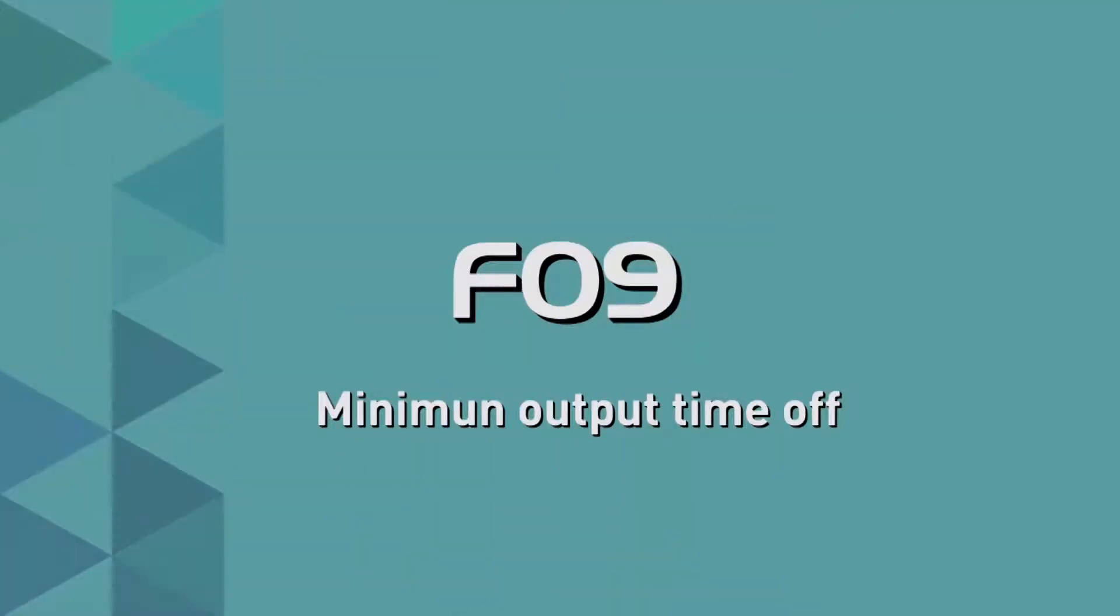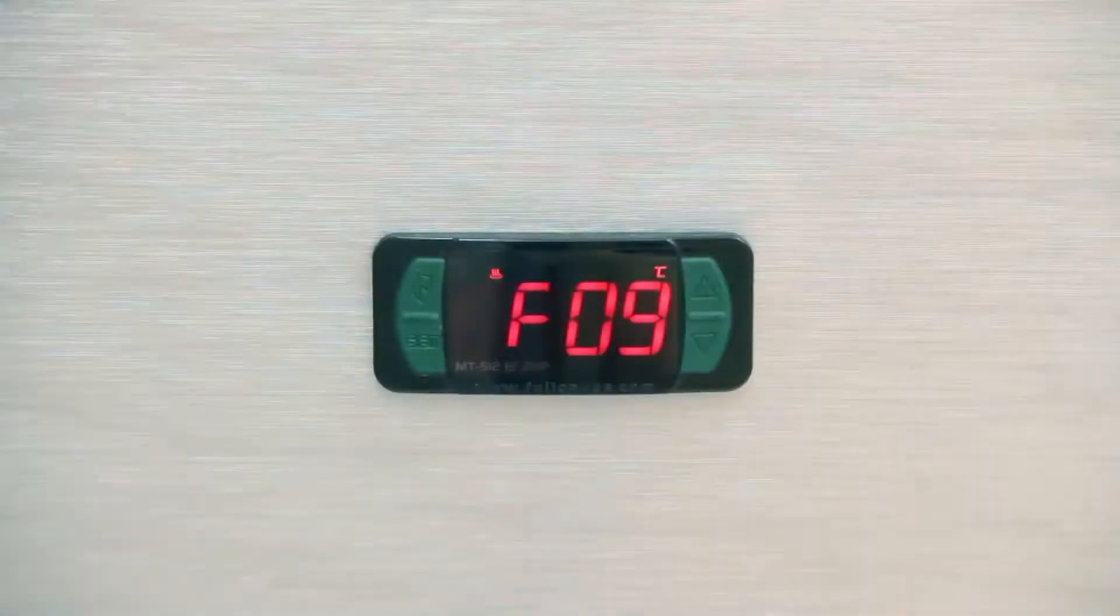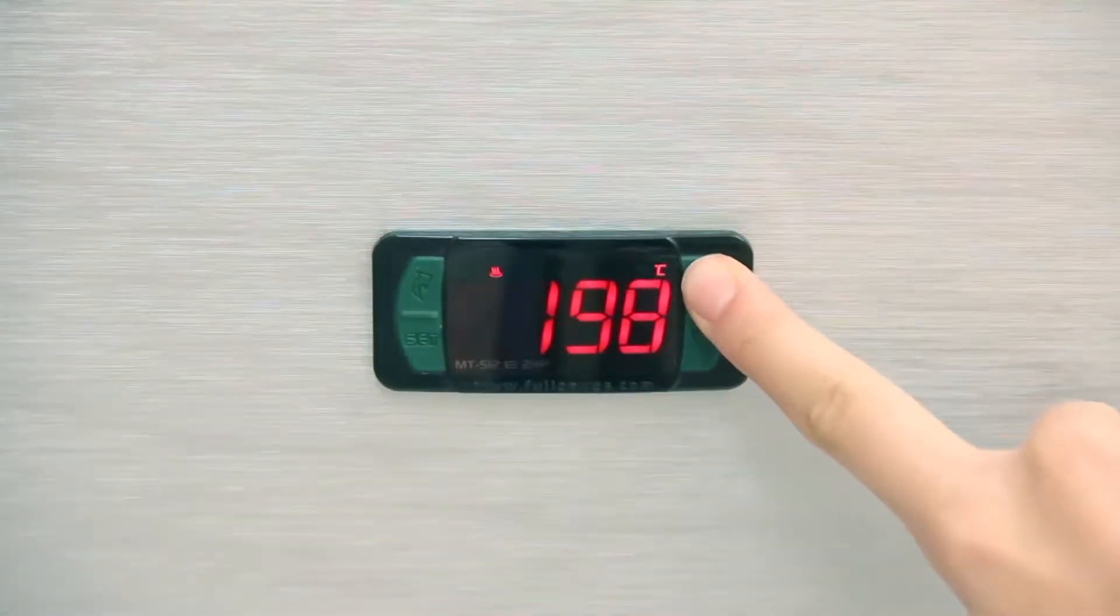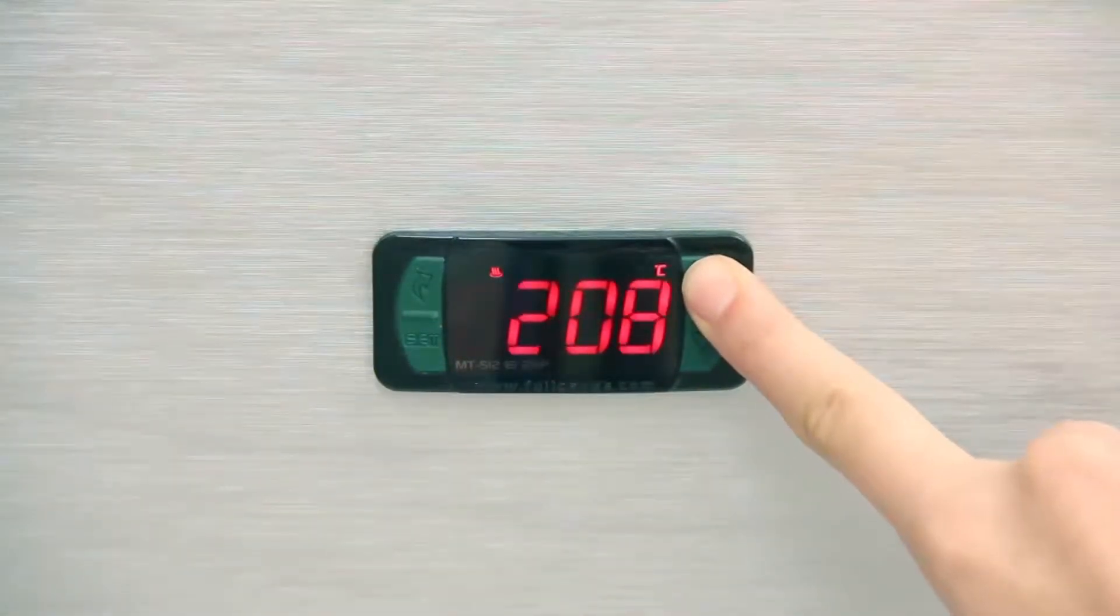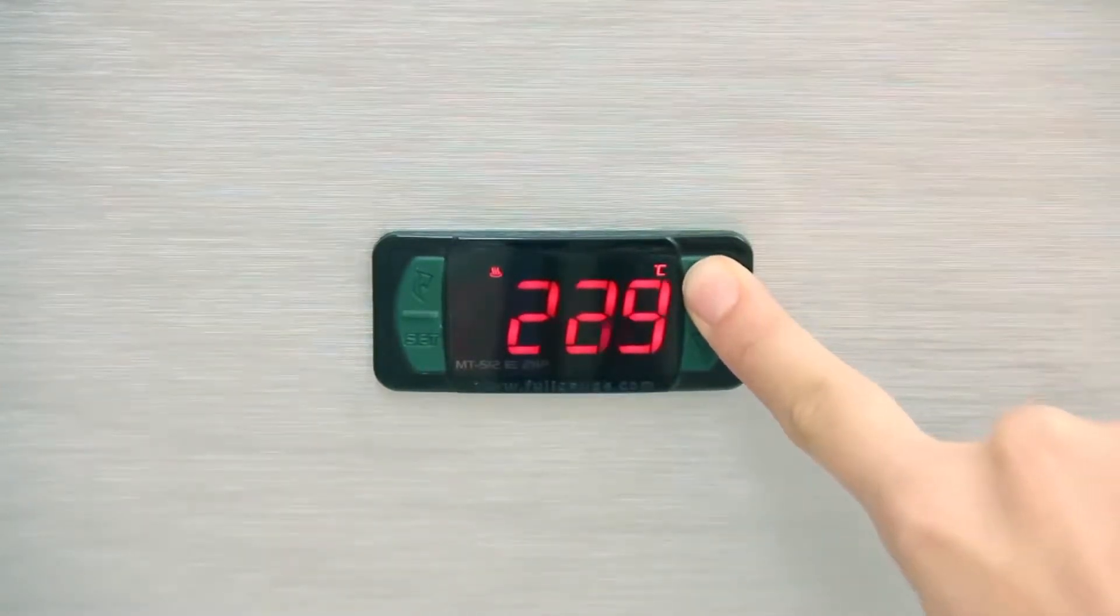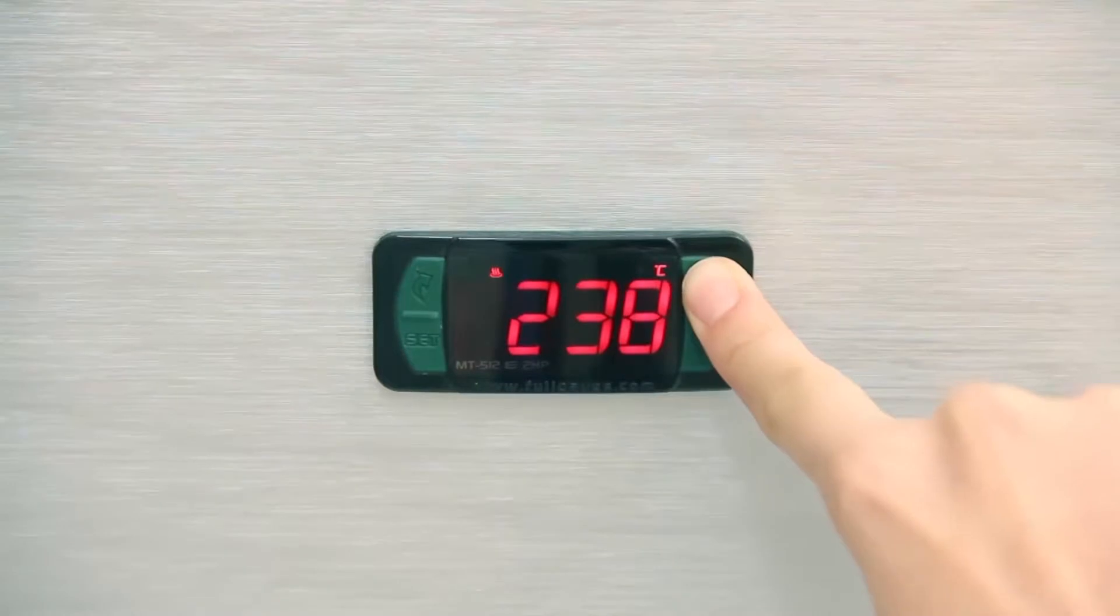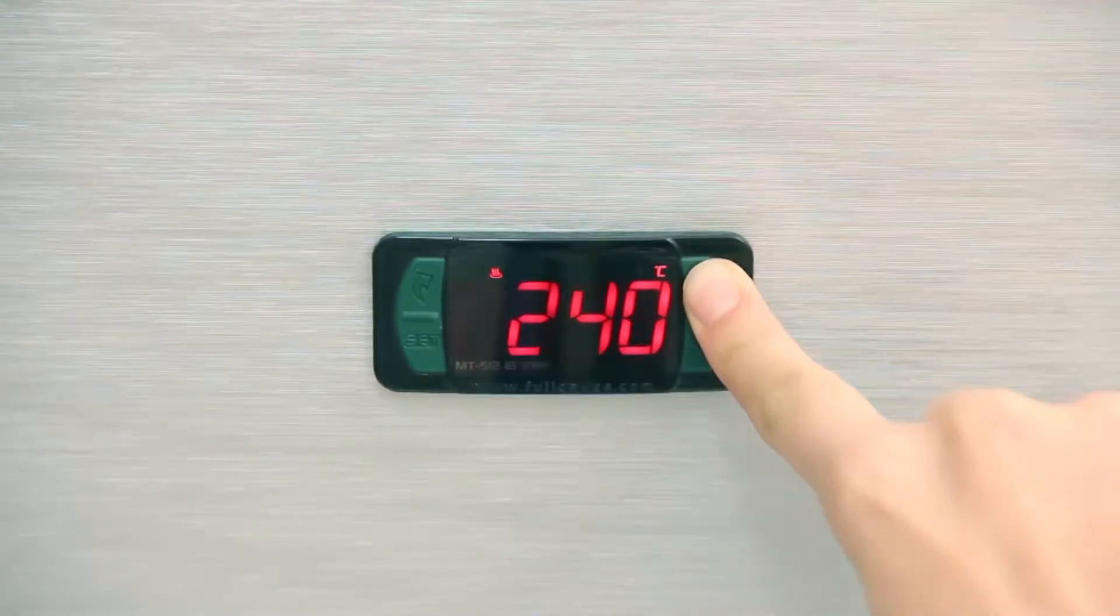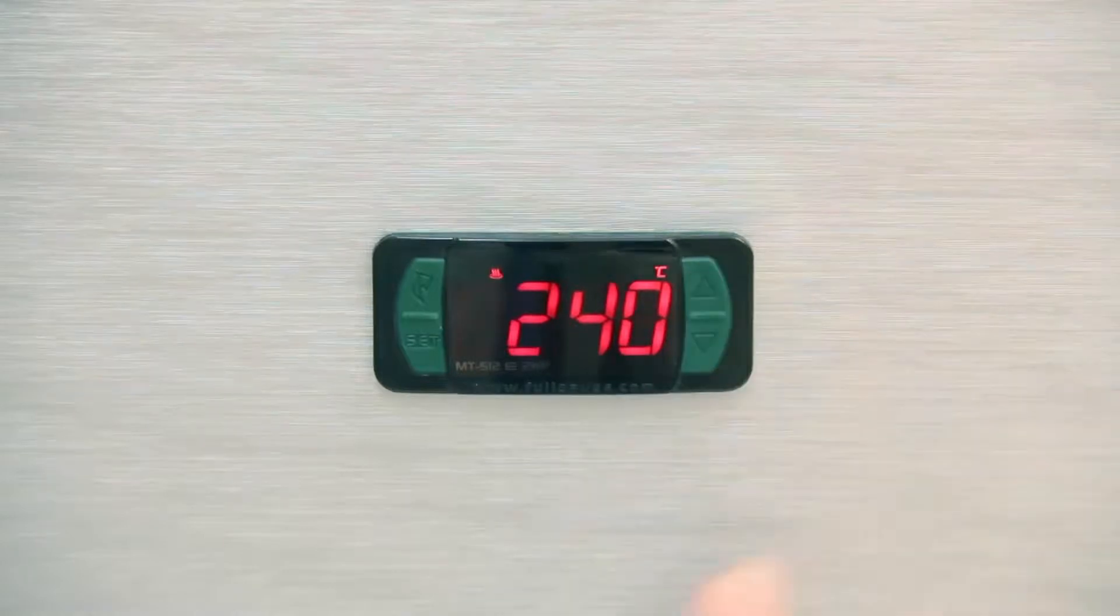F09 Minimum Output Off Time: Similar to the previous parameter, this determines the minimum relay off time since the last start. Select No so as not to adopt a minimum time, or provide a value between 1 and 999 seconds. In the examples, we chose 240 seconds for both applications.